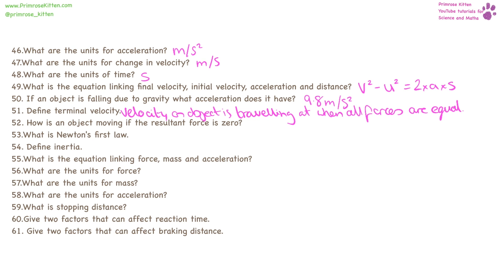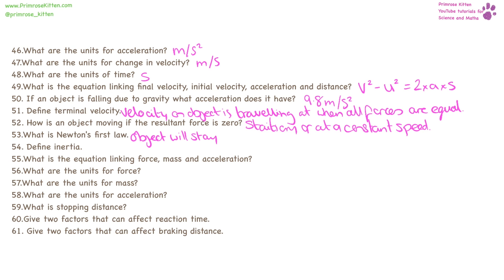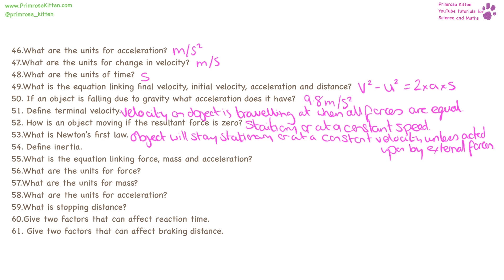If the resultant force is zero and the object is already moving, then it is going to be moving at a constant speed. Newton's first law says that an object will stay stationary or at a constant velocity unless acted on by external forces. Inertia is where something keeps doing what it is doing unless acted on by external forces.